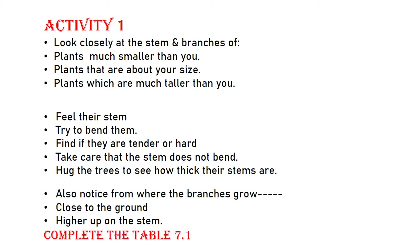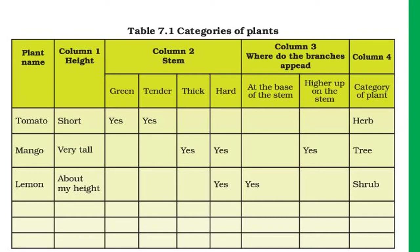Let us study Table 7.1: 'Categories of Plant'. First you can see the plant name. Column 1 is the height of the plant. Column 2 is the stem, further divided as: green, tender, thick, hard. Column 3 is where do the branches appear — at the base of the stem or higher up on the stem. Column 4 is the category of plant.